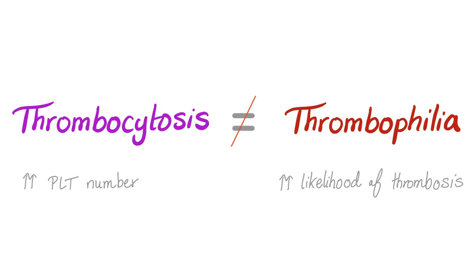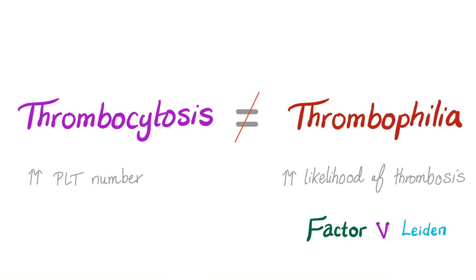There is a huge difference between thrombocytosis and thrombophilia. Thrombocytosis: thrombocytes are the platelets, and -osis is a condition — so it means increased number of platelets. Thrombophilia: philia means to love (from the Greek word philos). Factor V Leiden fits thrombophilia — they have increased risk of thrombosis, which could be 5x, 10x, 50x, 75x, or even 100x.